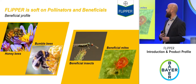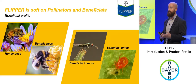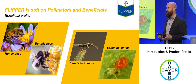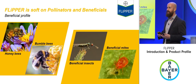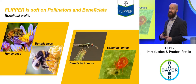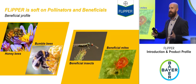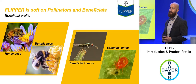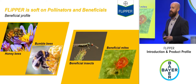A really important aspect of Flipper's profile is its safety to pollinators and beneficial insects. This is particularly relevant where beneficials are actively used, but also important in all vegetable crops. At a Seminis site last year, parasitic wasps were found in the Flipper plots but not in any other plots.